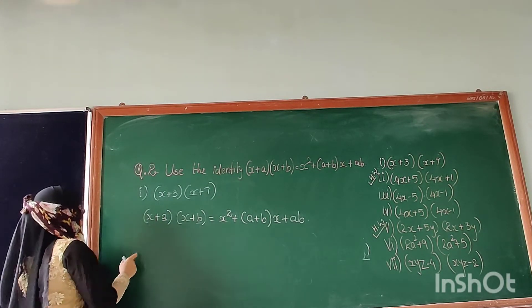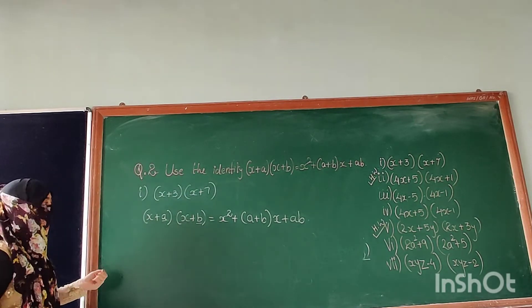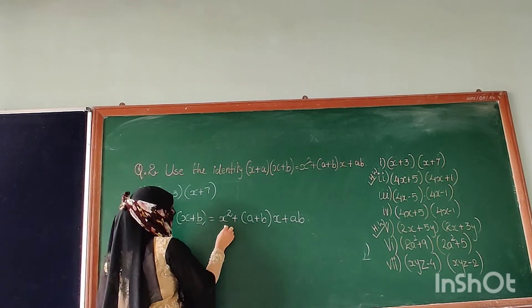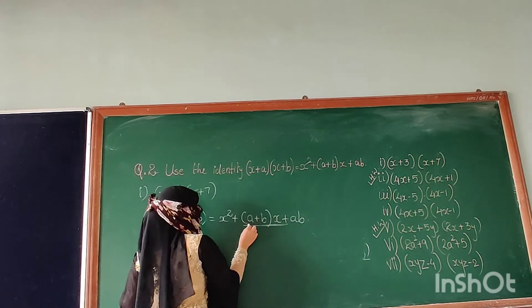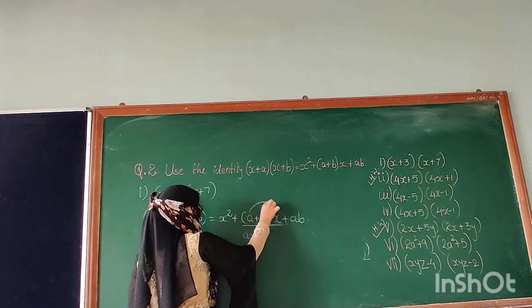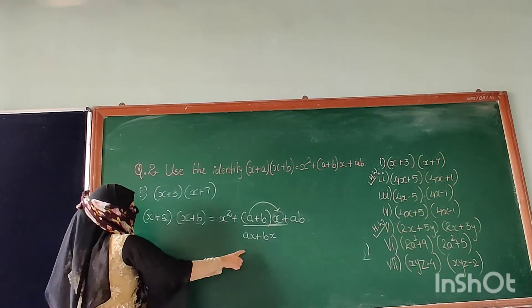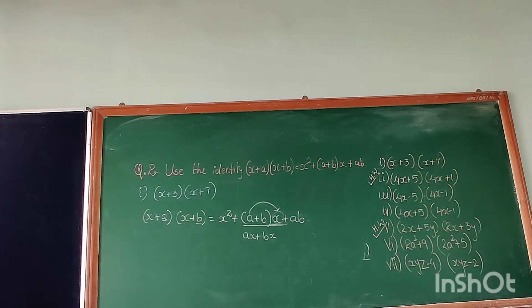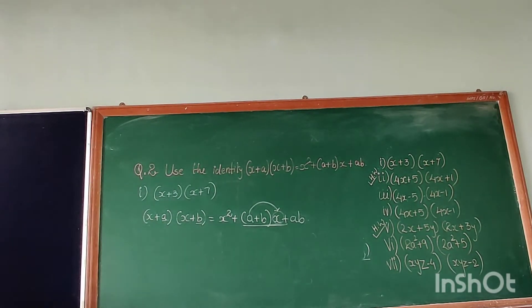Now look here. This identity is the same that you have studied — nothing is new in that. What is the difference? Let me tell you. Here, in this second term, (a plus b) will be multiplied into x, so you will get ax plus bx. What they have done is they have taken x as common and you got this term. So it is not a new identity — you have already studied this.